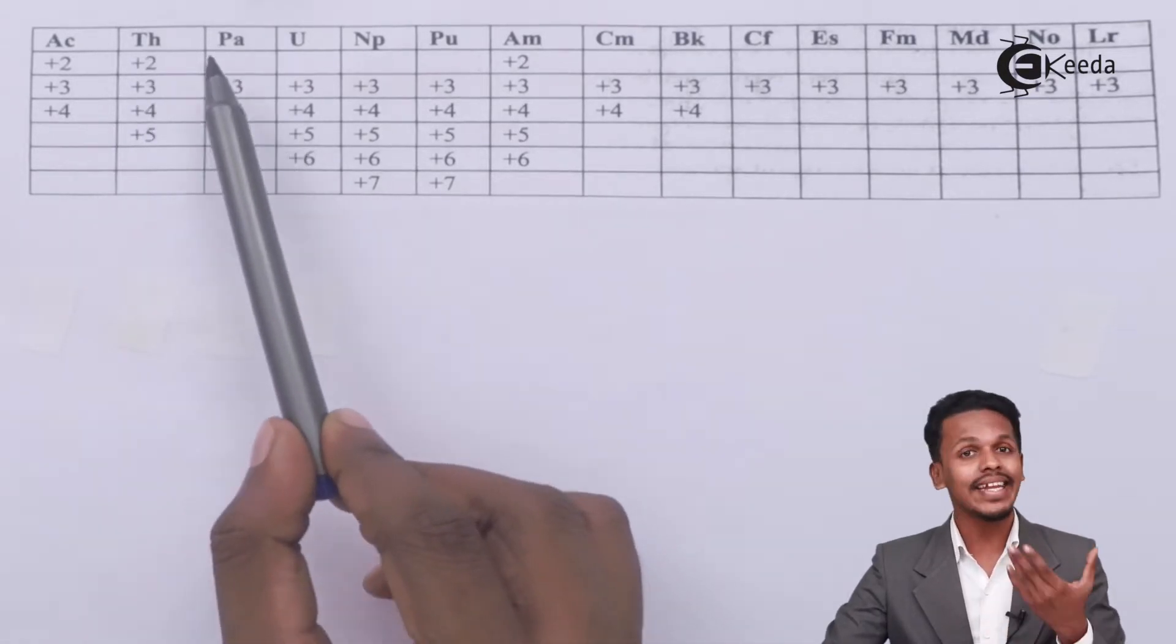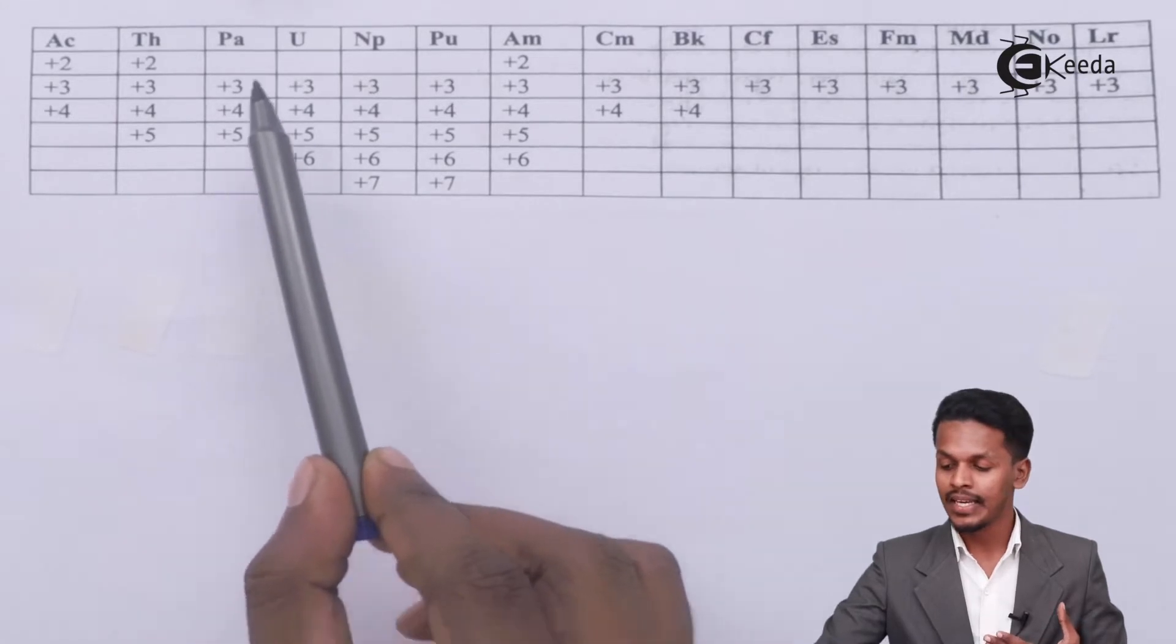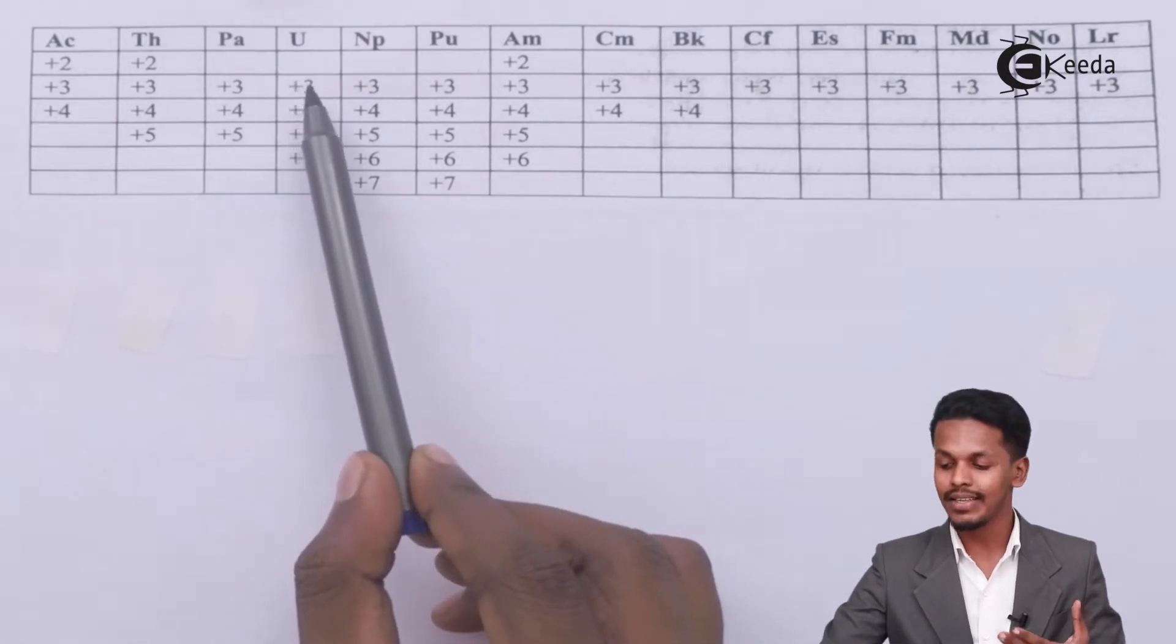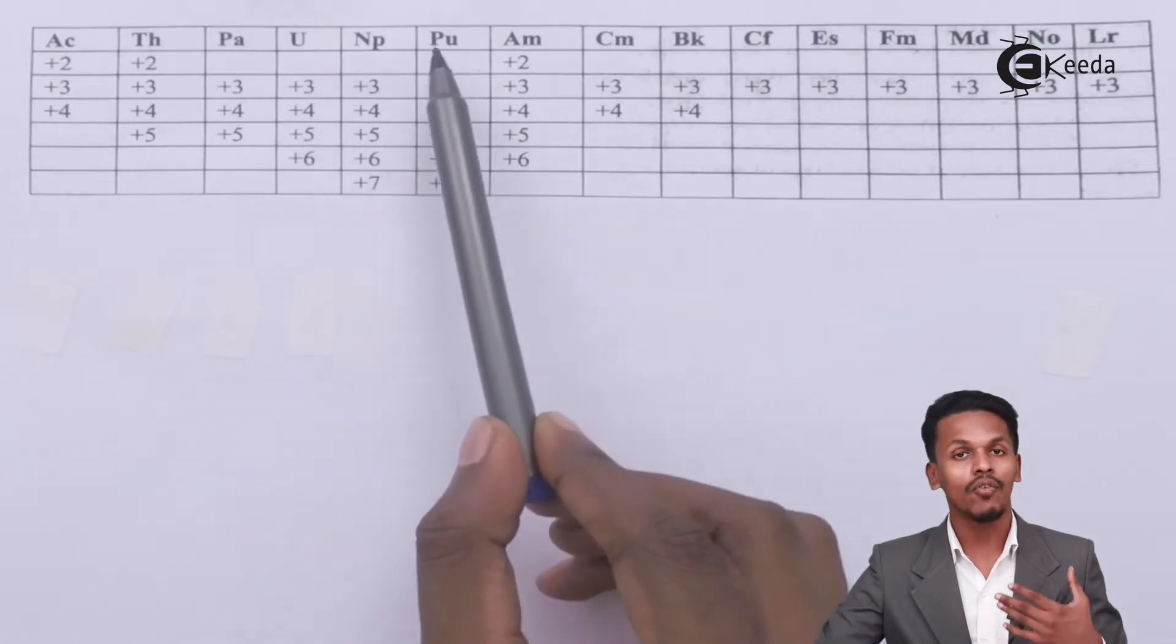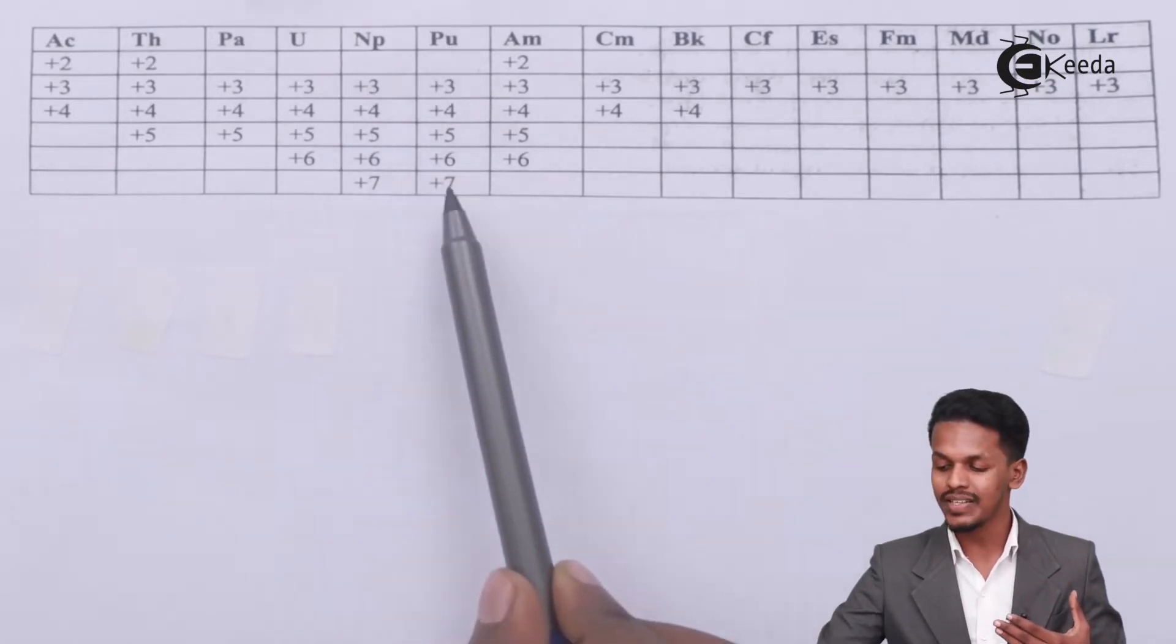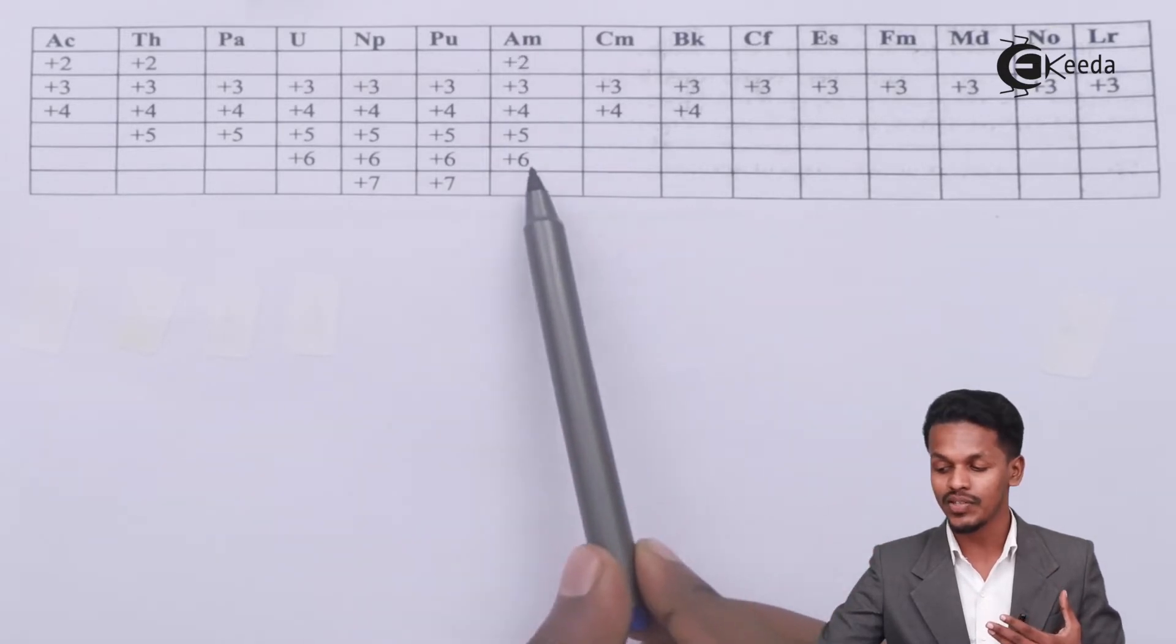Talking about protactinium, it ranges from +3 to +5. For uranium, it is +3 to +6. For neptunium, it is +3 to +7. For plutonium, it is +3 to +7 again. And for americium, it is +2 to +6.